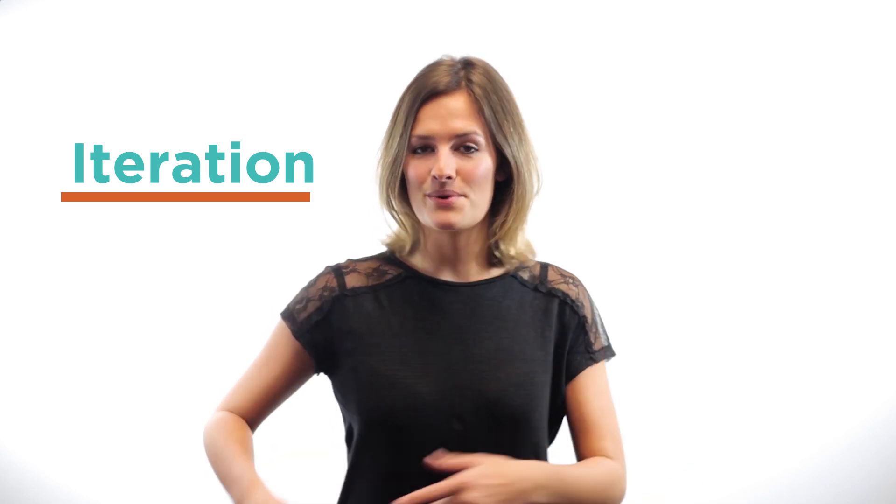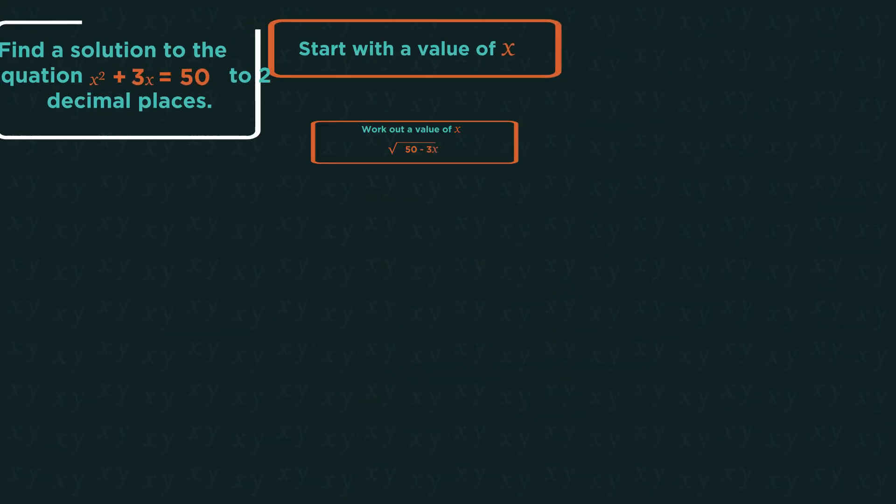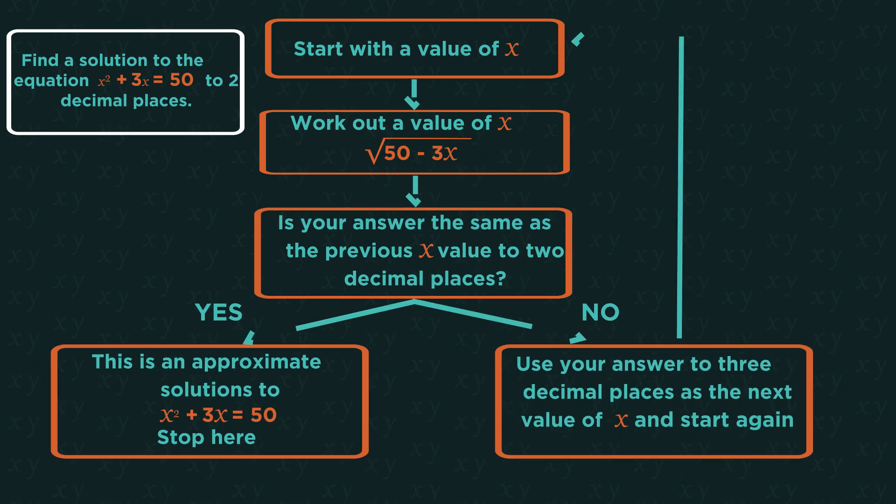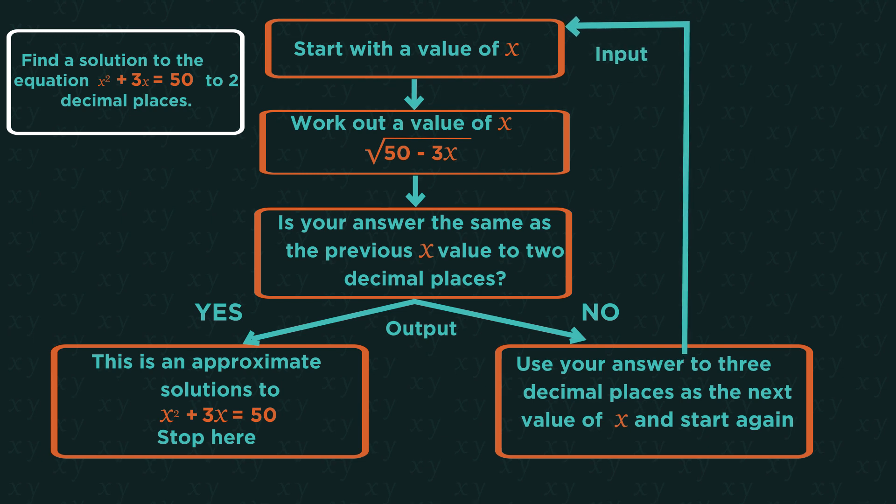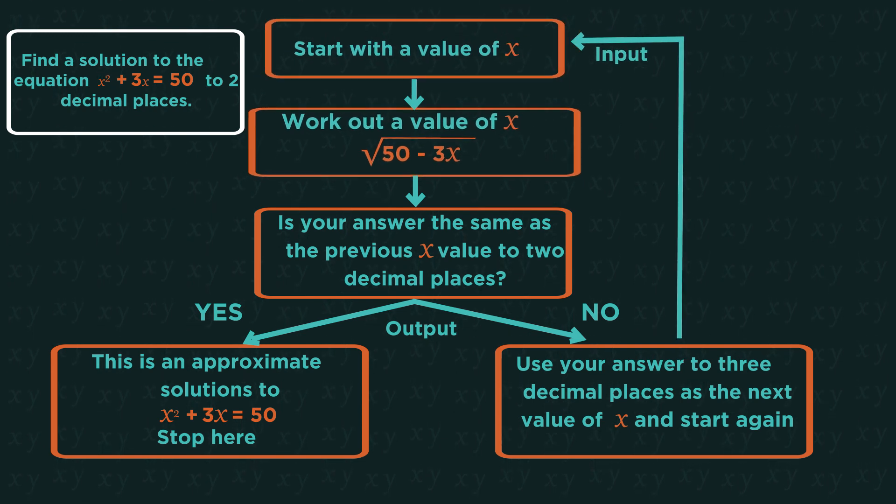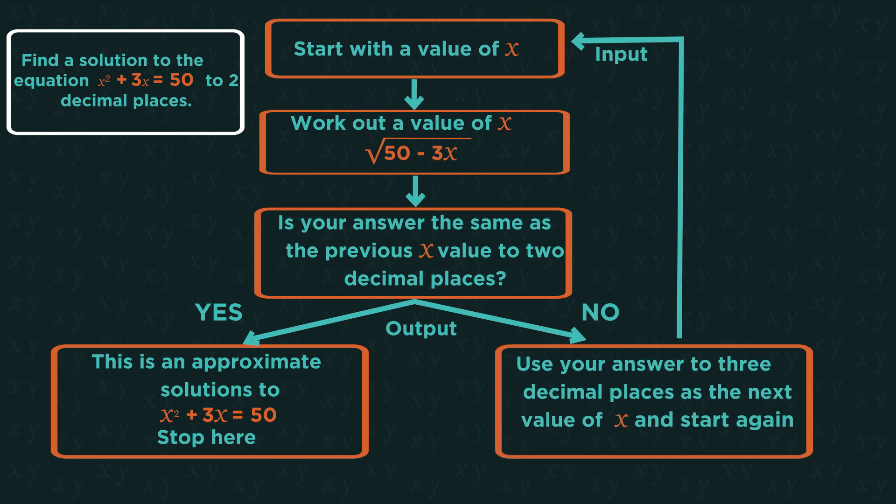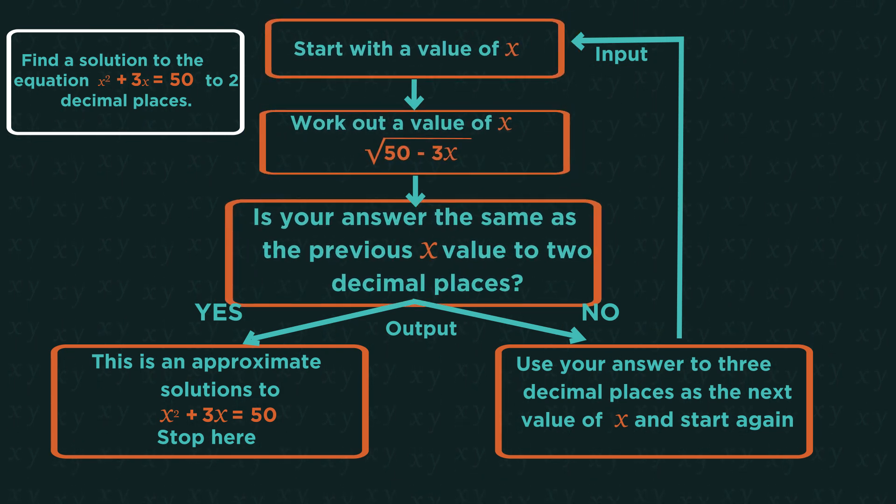Iteration is a method to solve equations by finding an approximate solution. An iterative procedure is one which is repeated many times. Each time it runs, the output becomes the input for the next cycle and we keep going until the output matches the input.